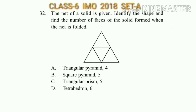Question number 32: The net of a solid is given. Identify the shape and find the number of faces of the solid formed when the net is folded. Looking at the figure, when the net is folded the shape is a triangular pyramid and the number of faces is four. So the answer will be option A.